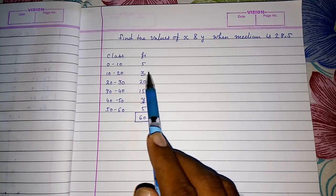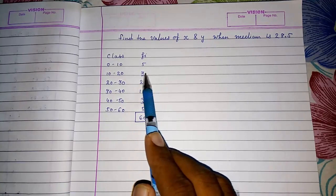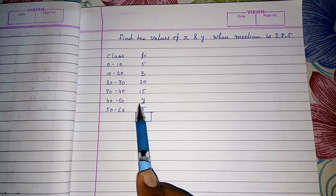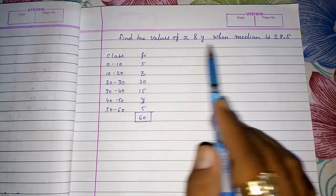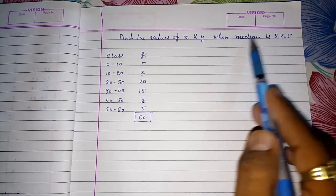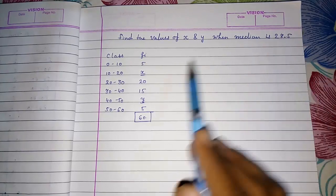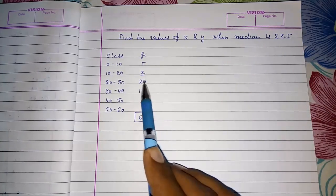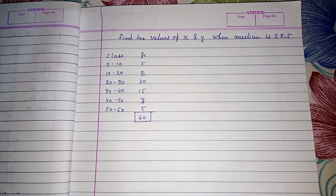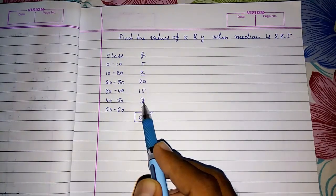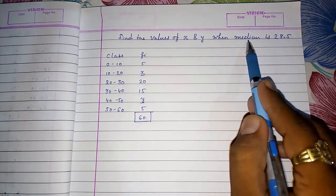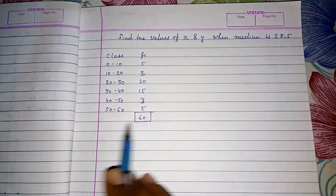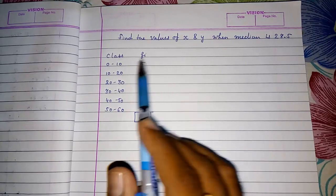Now when there are two unknown values or any one frequency is unknown, at that time either they will give you median. If this is the question of mean, at that time they have to give us mean. At that time only we can find these unknown frequencies. So for finding frequencies of this question they had given us median. So we have to use median formula to solve this.